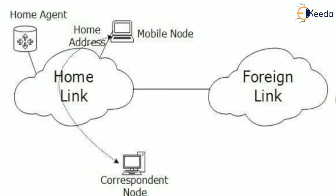But what will happen if our mobile node moves from the home network to the foreign network? Will this mobile node change its IP address? If the mobile node changes its IP address and gets a new one provided by the foreign network, it will lose communication with the correspondent node. This is because the correspondent node has the IP address of the mobile node that was provided by the home network, so it will send packets to the home network, but the mobile node is now in the foreign network. Hence, communication will not successfully happen.